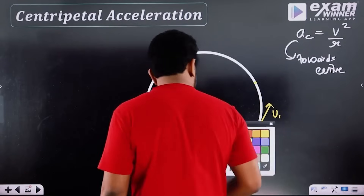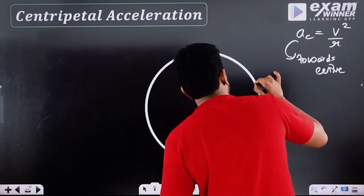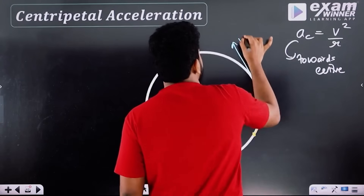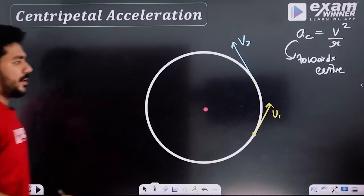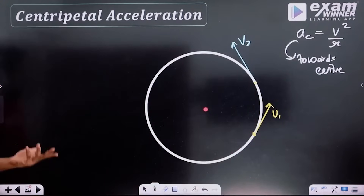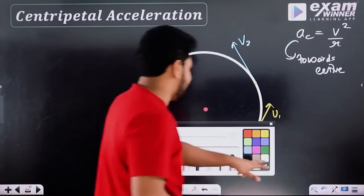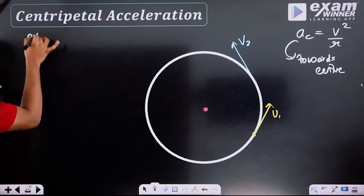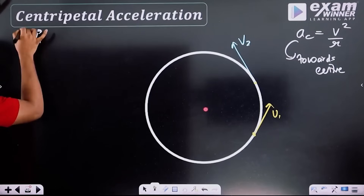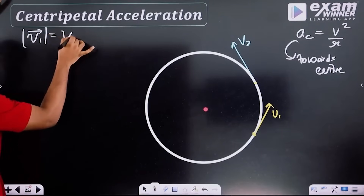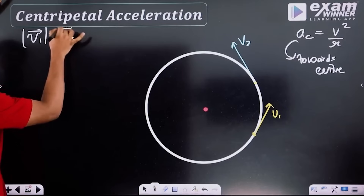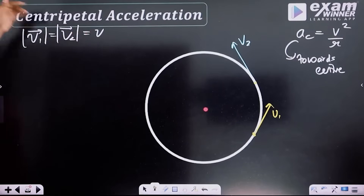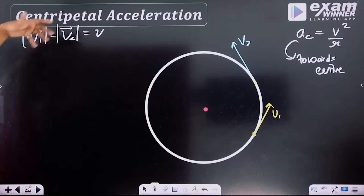This is the tangent. This is the velocity — the velocity vectors. The magnitude of v1 is equal to the magnitude of v2, equal to the common magnitude V. This is of uniform motion.